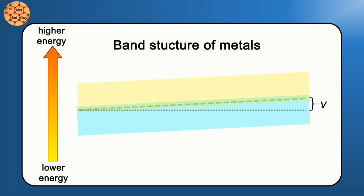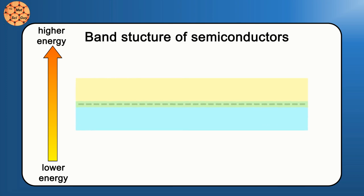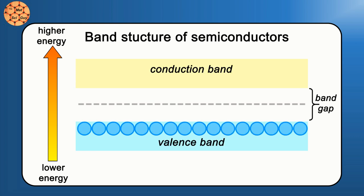For semiconductors and insulators, the situation is a bit different. There's an energy gap between the bands near the Fermi level, called a band gap. Since the Fermi level sits in the middle of this gap, the states in the lower band, called the valence band, are mostly filled, while the states in the upper one, called the conduction band, are mostly empty.